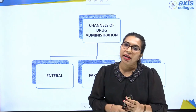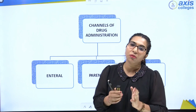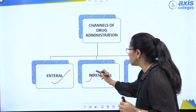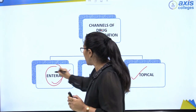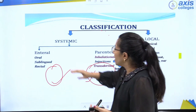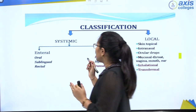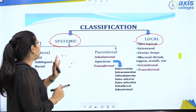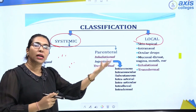Now, the channels of drug administration: there are majorly three channels — enteral, parenteral, and topical — by which a drug can be administered into the body. The routes of drug administration are divided into two main parts: systemic and local. Systemic relates to the bloodstream, where the drug enters the body's circulation. Local means it is applied locally on the upper surface. Systemic is further divided into enteral and parenteral.